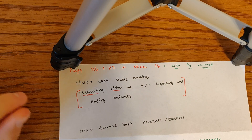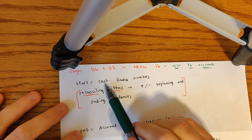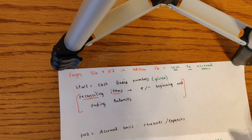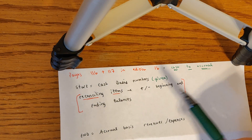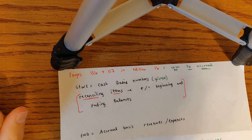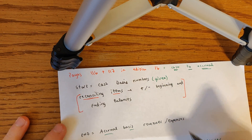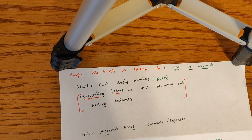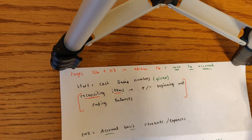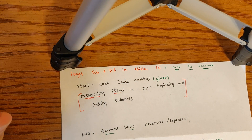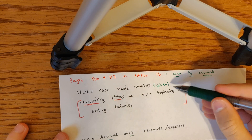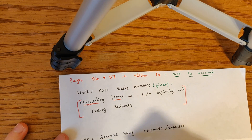The process is that we want to start with cash basis numbers, which are given in the problem — for example, cash collected or cash spent on operating expenses. The end point is accrual basis revenue or expense, depending on whether we're doing cash collected or cash paid. To get from our start point to our end point, we have to have these reconciling items: accounts receivable, prepaid expenses, and accrued liabilities. We add and subtract the beginning and ending balances to get from cash to accrual basis revenue.